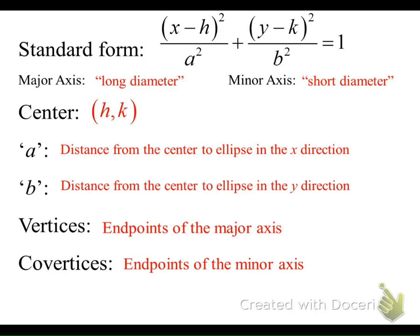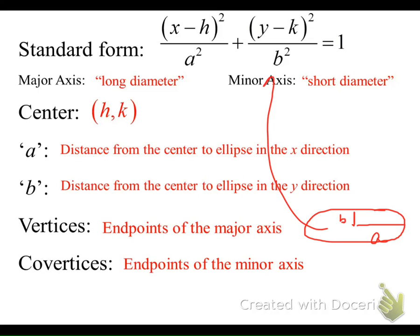To give you an idea of what we're talking about: if we have an ellipse that's squashed in the vertical direction, the a distance would be this horizontal distance from the center out to the ellipse — left and right — and the b distance would be the shorter distance from the center to the ellipse in the vertical direction. The vertices are these two points along the major axis, that's the longer diameter, and the co-vertices are the end points of this shorter minor axis.